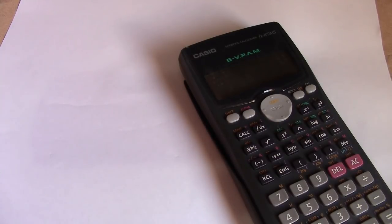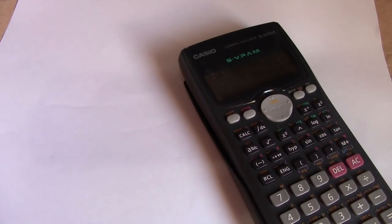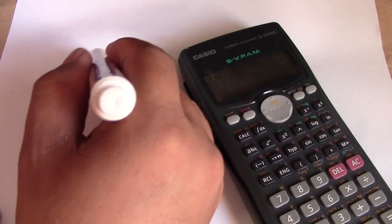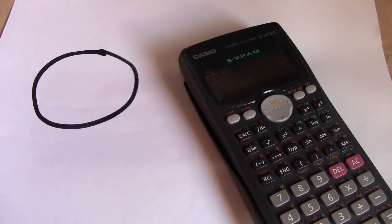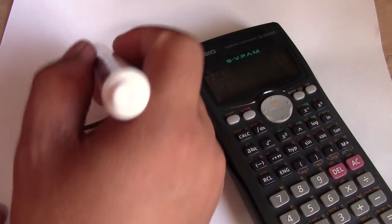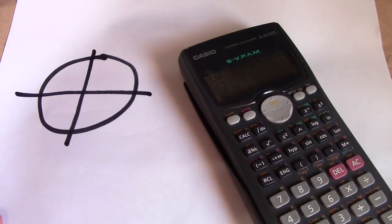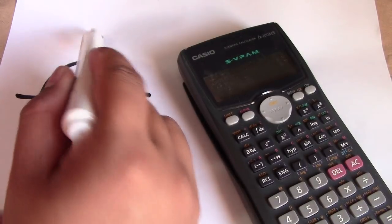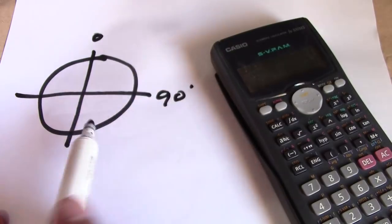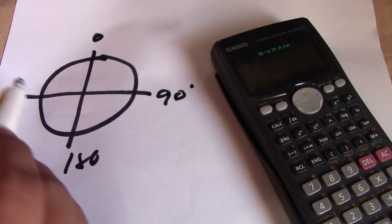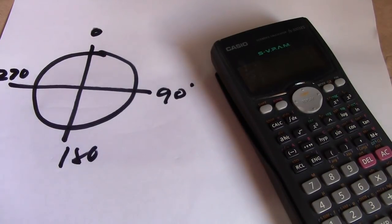Hi guys, welcome to Piping Welding and NDT channel. Let's talk about arc length. You must know how to compute the arc length. I will show a circle here — we have 360 degrees in one circle. Dividing it into 4 parts: 0, 90 degrees, 180, and 270 degrees.